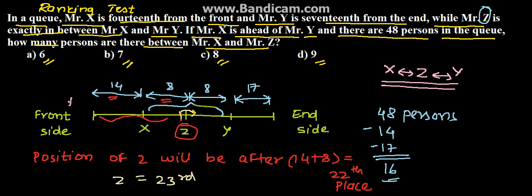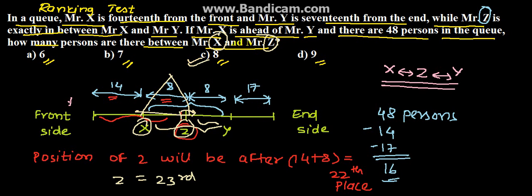Now we need to find the people sitting between X and Z. X is at 14th and Z is at 23rd, and we know the distance between them is 8. Therefore, the answer is option C — 8 is the solution for the given problem. Thank you.